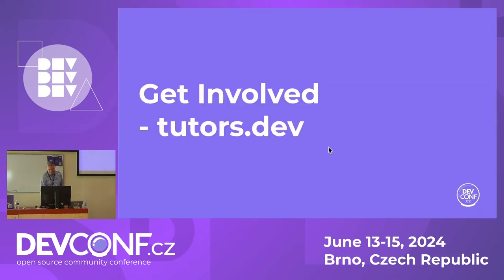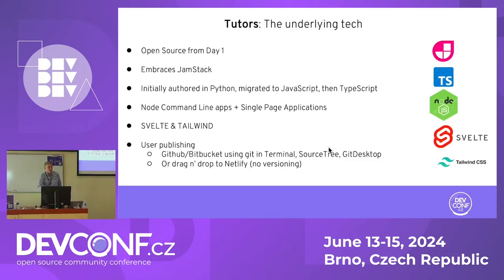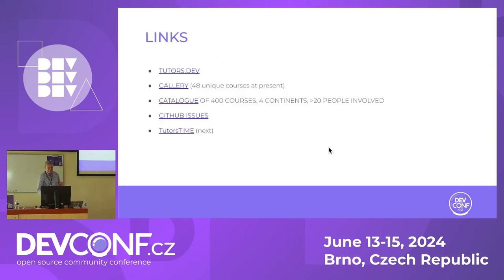So this is our call to action: get involved in Tutors.dev and help us build it. Tutors.dev is open source from day one. It embraces JAMstack — JavaScript, APIs, and Markup. Initially authored in Python, migrated to JavaScript, then TypeScript, with node command line apps and single page applications using Svelte and Tailwind. Tutors.dev is the landing page. We have a gallery of 48 unique courses selected from 400 courses running across four continents. We have 20 developers involved, largely as a result of DevConf 2022. That's why we're in the open source success story track today.